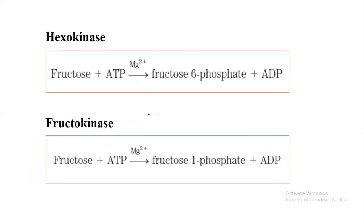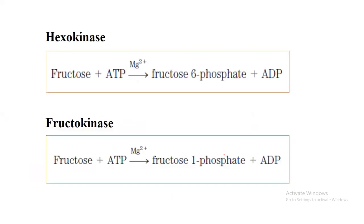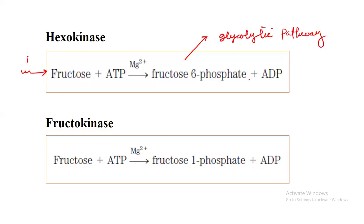Starting with fructose: suppose we have consumed sucrose, whose hydrolytic products are glucose and fructose. For fructose, there are two entry points into glycolysis. The first is by the action of hexokinase. Just as with glucose, hexokinase phosphorylates carbon number 6 of fructose, converting it into fructose-6-phosphate, which is a glycolytic intermediate. So by a single enzymatic reaction, fructose enters the glycolytic pathway.